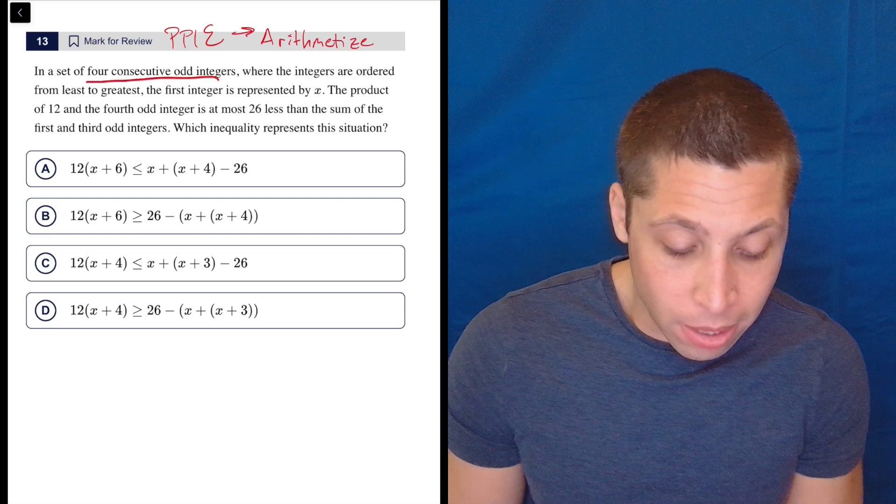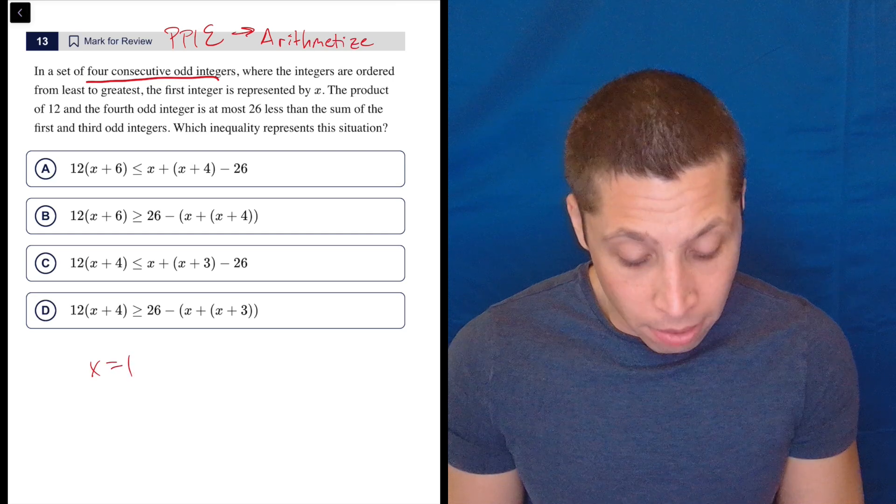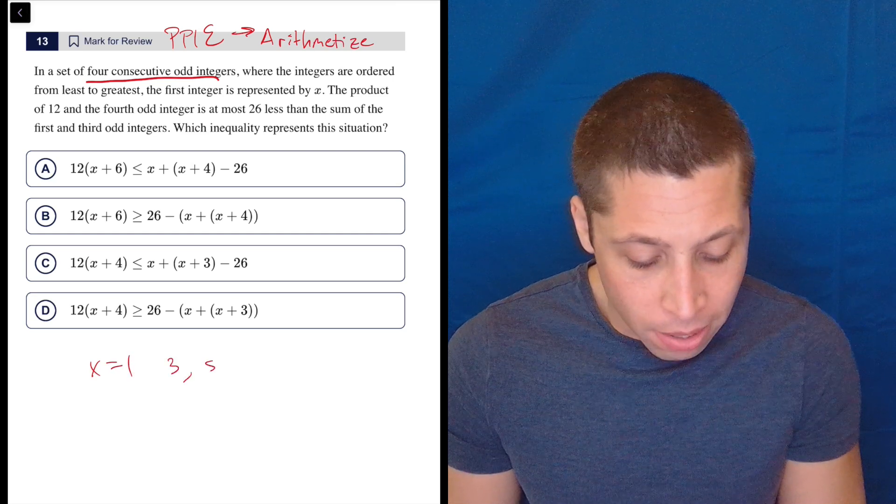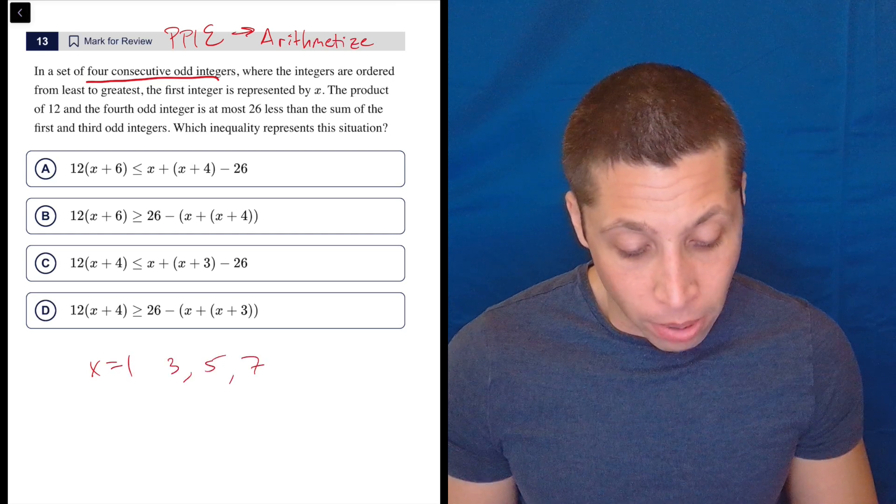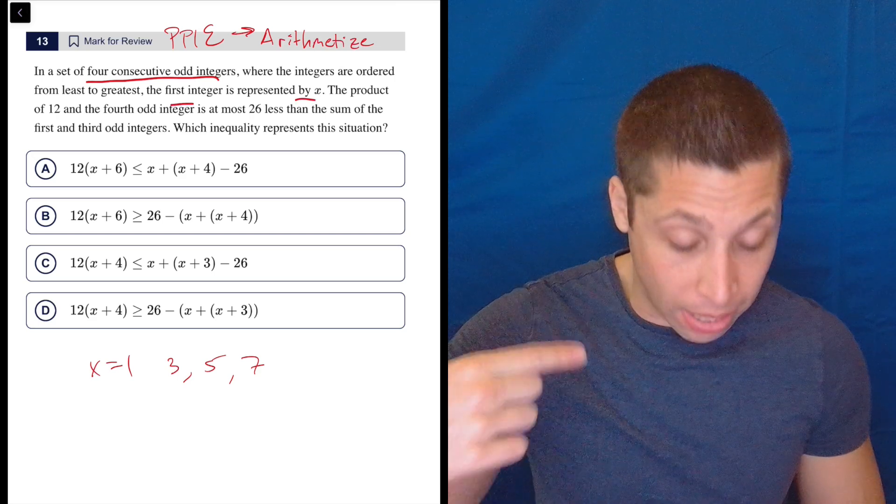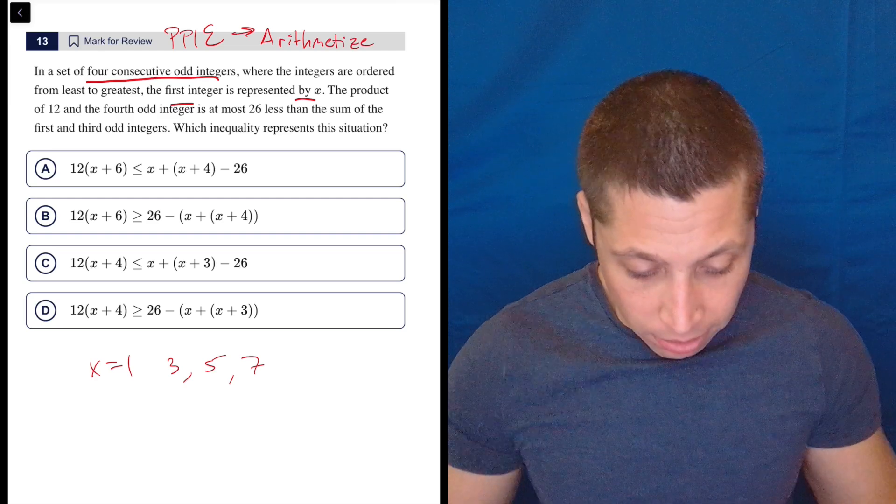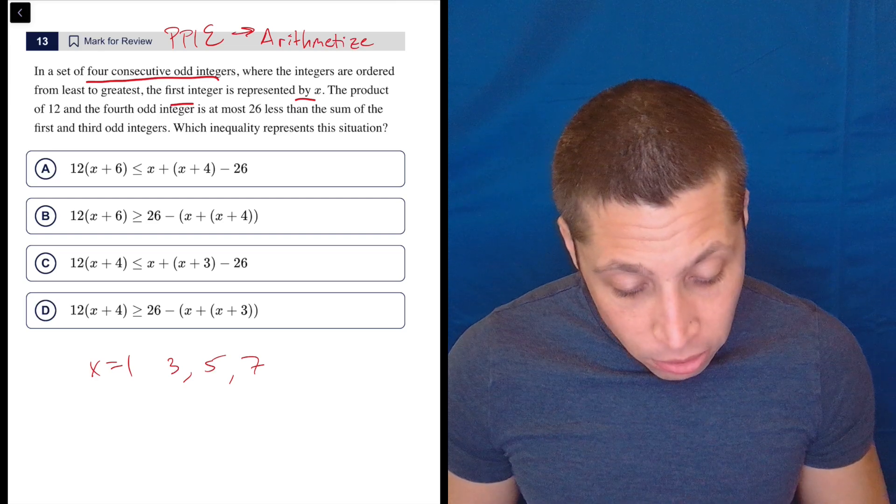So a set of four consecutive odd integers, I'm not that clever. How about x is one and then the others are three, five, and seven, right? The first integer is represented by x. So the first is one and then consecutively three, five, and seven. Those are odd integers. They're the simplest ones. Let's think about it. Now I can follow these instructions much more easily.